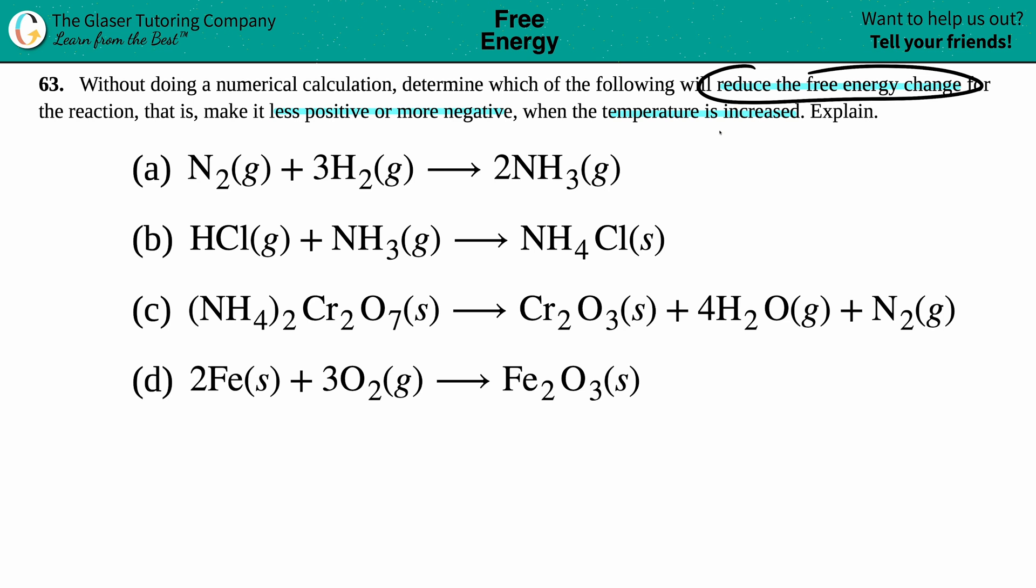Now remember, if we want to reduce the free energy change, that means that we want to decrease the free energy, right? And the free energy is always a delta G. Now if we want to bring that delta G down, it seems that we're entering more negative territory. You could either think about it as less positive or more negative, but if we assume that we're going lower and lower, we're going to eventually start going into negative values. And if a delta G is negative, that means that we're going to be a spontaneous reaction.